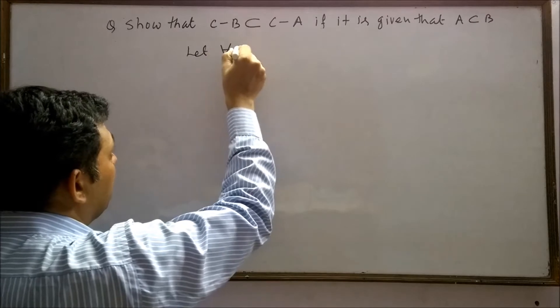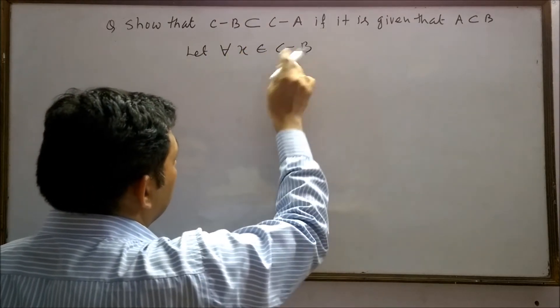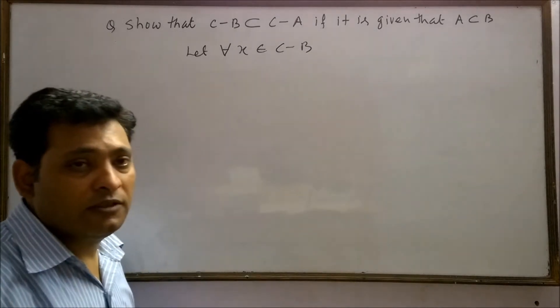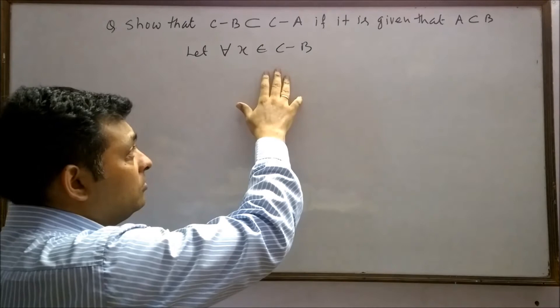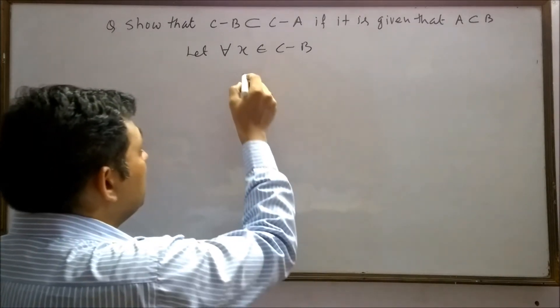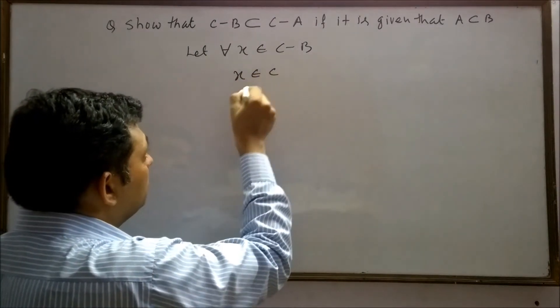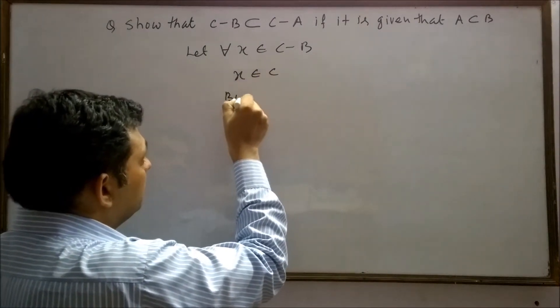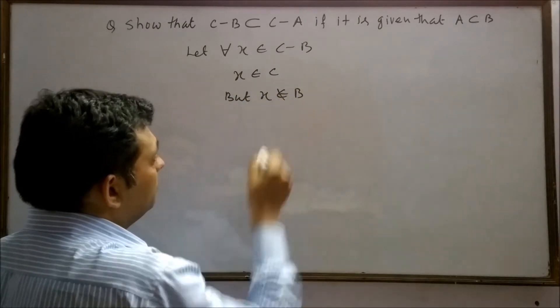Let all x belong to c-b. c-b is a set which contains those elements of c which do not belong to set b. It means x belongs to c but x does not belong to b.